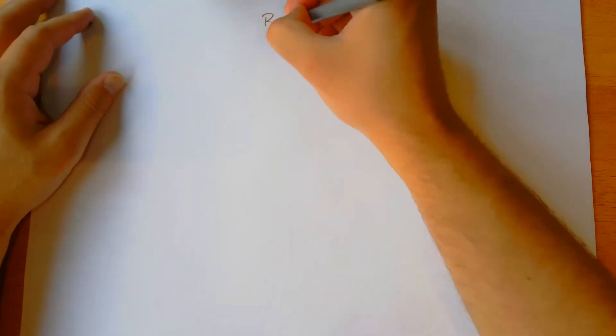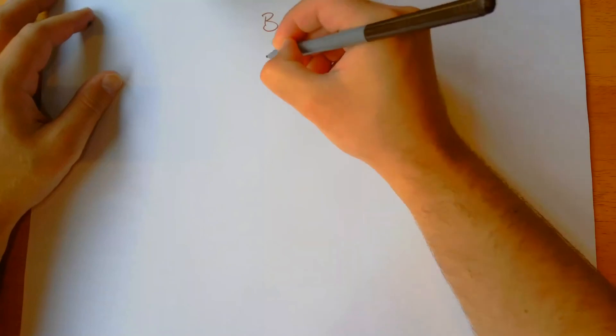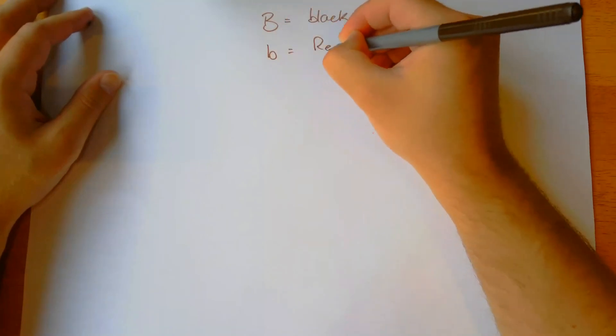Next question: Cocker spaniel's black coat colour is a result of a dominant allele, and red coat colour is a result of a corresponding recessive allele. We need to figure out which alleles to use. Remember you can't use B and R because the two alleles have to use the same letter. We're going to let big B represent black coat, and little b represent red coat.